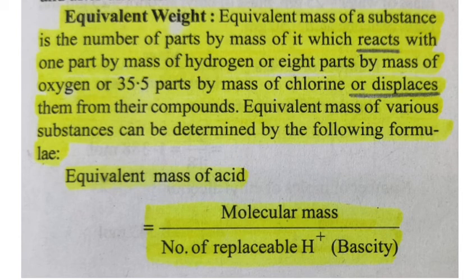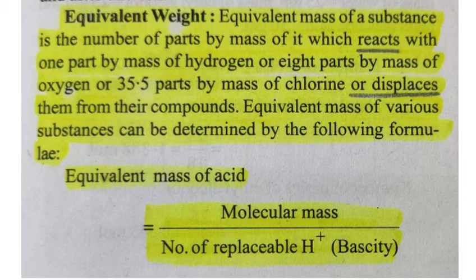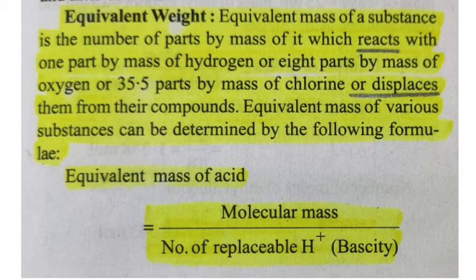If we have oxygen, then the equivalent weight corresponds to 8 parts by mass of oxygen. If we have chlorine, the reaction is with 35.5 parts of chlorine, and it will be displaced — then the equivalent weight will be the same. So, the amount of substance in grams required to react or displace another substance is known as the equivalent weight of that substance.